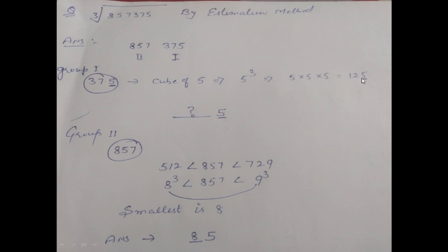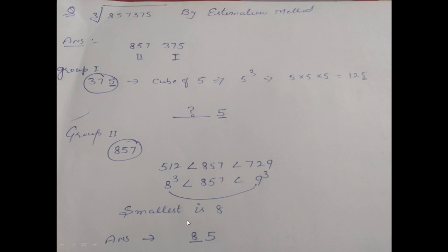You will not write the other digits — only the unit place number. Then take the second group and find the cubes nearest to it. 512 is less than 857 and 729 is greater than 857. 512 is the cube of 8 and 729 is the cube of 9. Between 8 and 9, the smaller is 8, so write 8 in the answer. Your answer is 85.